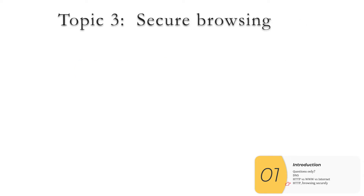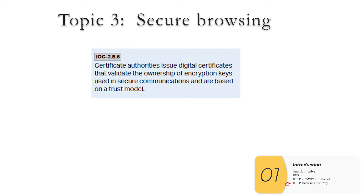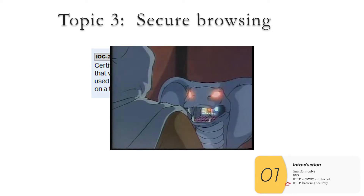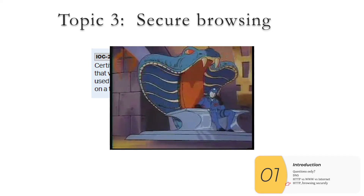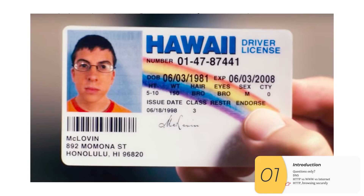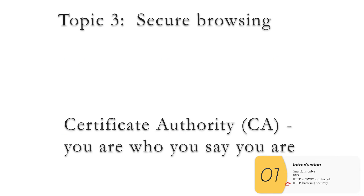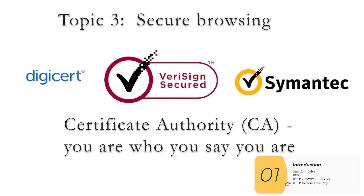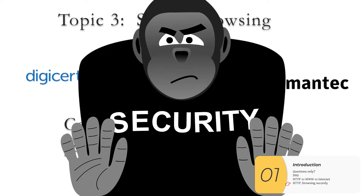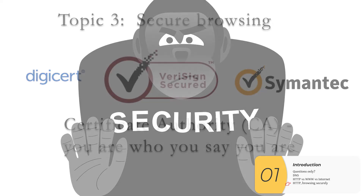The last major topic Code.org's video goes over is secure browsing. They mention digital certificates and certificate authorities. The digital certificate is basically just an ID — identification, please. But you need a way to make sure these IDs are real, otherwise you could get scammed. That's where certificate authorities come in — they prove you really are who you say you are. They are better at detecting fake IDs than your local bouncer at a bar.